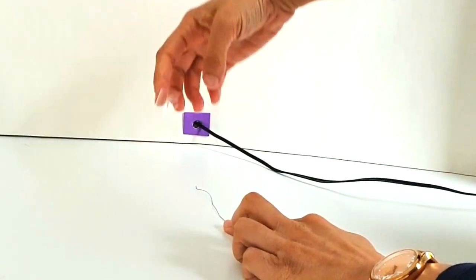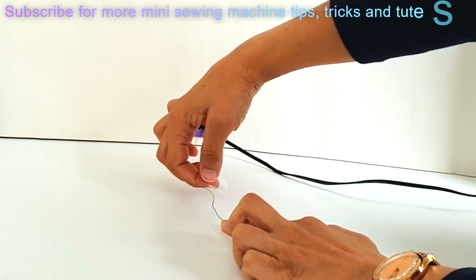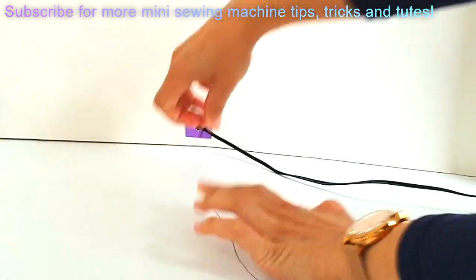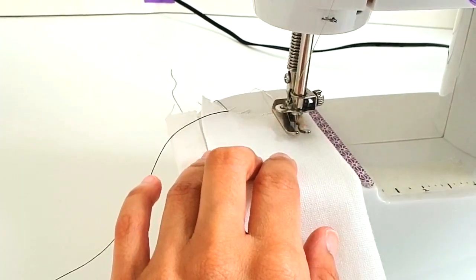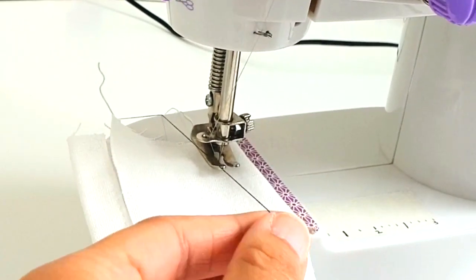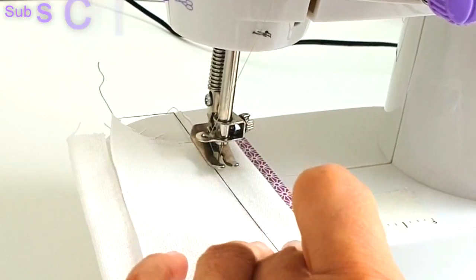Set up your mini sewing machine as usual and lift the presser foot. Pull the string from the back taut and slide it under the presser foot. Now lower the presser foot and you've got a straight line using your thread to follow as a guide.